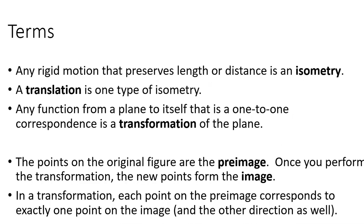In general, any type of rigid motion — so it could be reflecting something across a line, or translating something, like picking up a triangle and moving it three units down and four units to the right — that's a translation. Anything that preserves length or distance is called an isometry. By preserving, we mean it's the same thing. So if you took a rectangle and moved it five units to the right, the sides are still the same length and the angle measures are still the same.